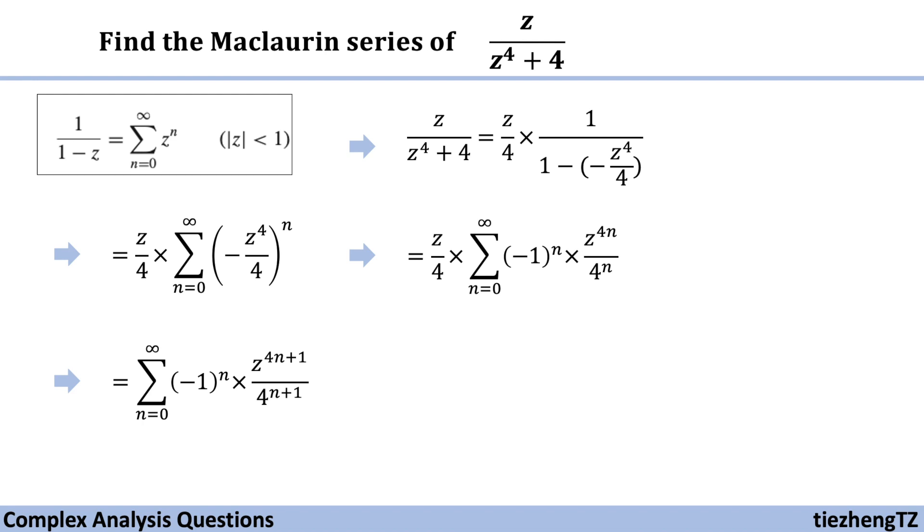Minus 1 to the power of n times z to the power of 4n plus 1 over 4 to the power of n plus 1. And since in the given format the absolute value of z should be less than 1...